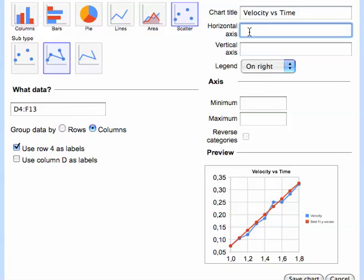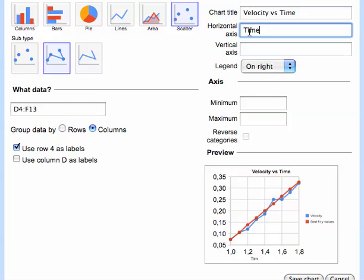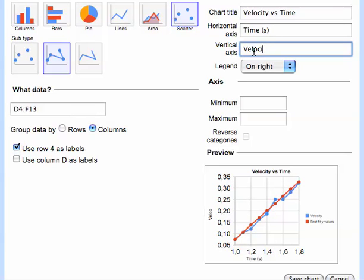And the horizontal axis is going to be Time (Seconds). The vertical axis is going to be Velocity (Meters slash Seconds). And there's going to be a little preview of what it's all going to look like. I'll hit Save Chart.